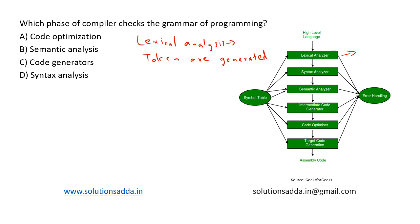These tokens are passed to the syntax analyzer. In the syntax analyzer, we actually analyze the syntax of the program — it is also known as parsing. In the second phase, syntax analysis, this phase takes the stream of tokens generated by lexical analysis and checks whether they are in conformance with the grammar of the programming language. So here we check the grammar.